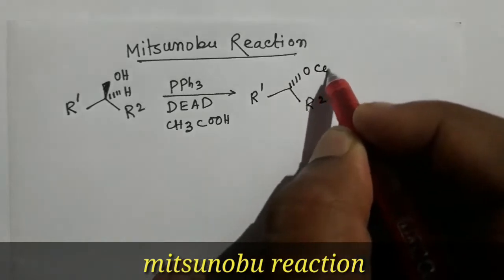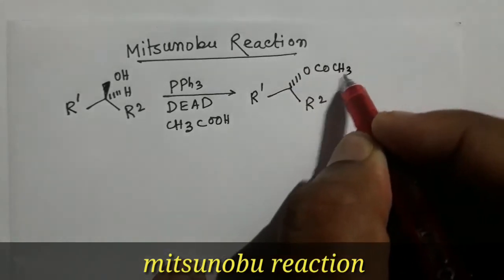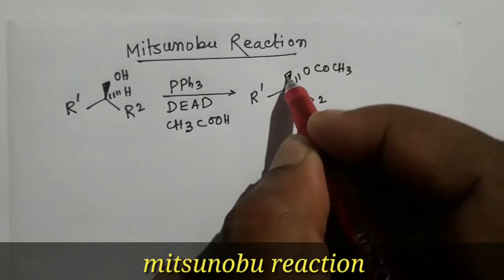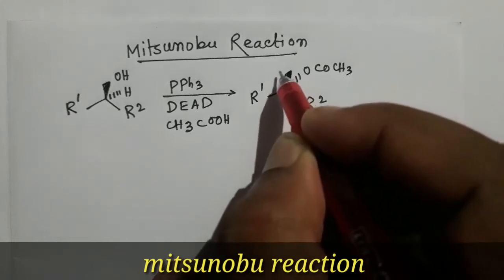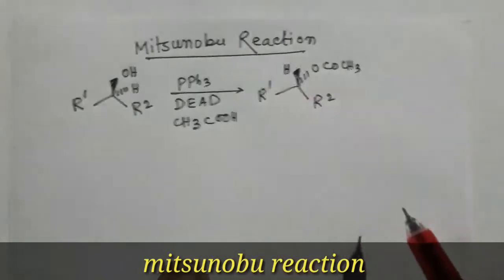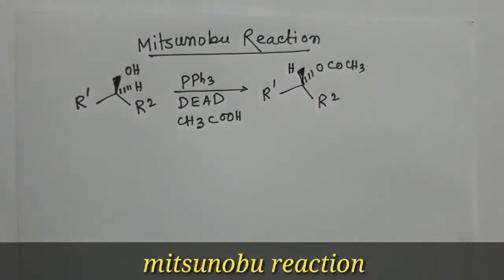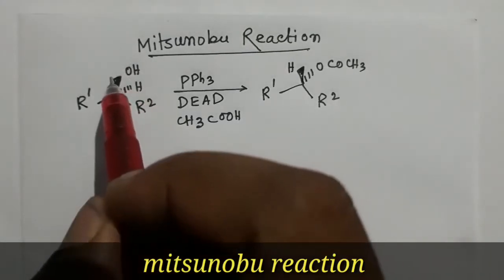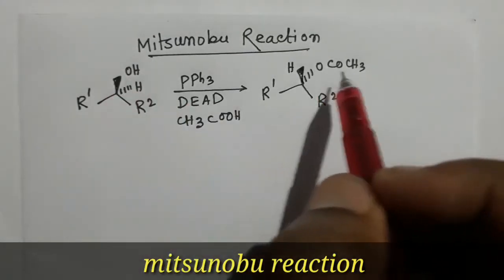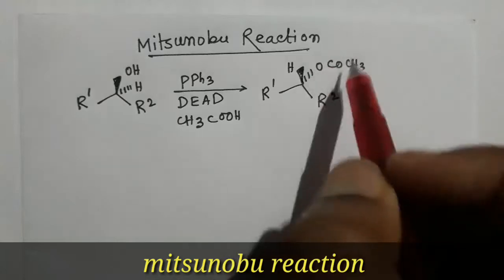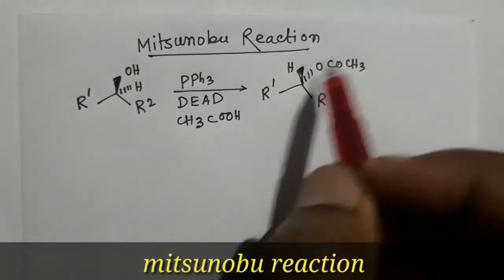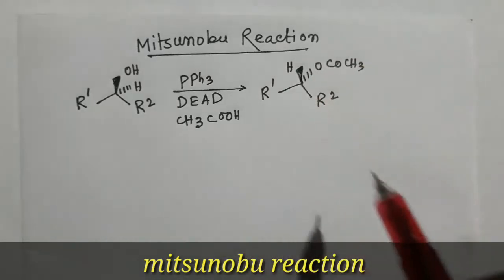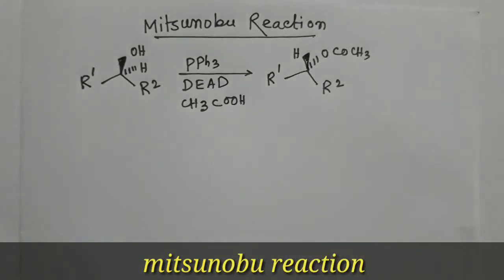The ester product has a C=O, CH3, and hydrogen above the plane. The OH group was above the plane, but the acetate in the product is below the plane. So in this reaction, what will be the reaction mechanism?